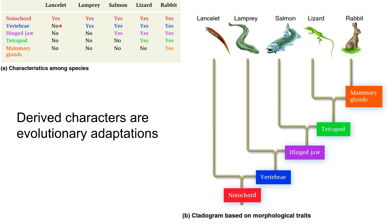As we keep going, lamprey also have vertebrae, but what separates all the rest from the lamprey is the hinged jaw. Since lampreys don't have a hinged jaw and all the rest do, they split from this organism. Then salmon branches off because it doesn't have four legs. The rabbit has mammary glands but the lizard does not, and that branches off. These cladograms or phylogenetic trees are hypotheses. As scientists learn more information or get more evidence, they've adapted and changed them.